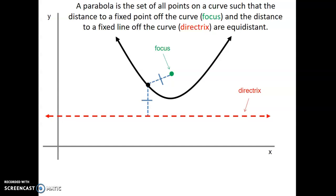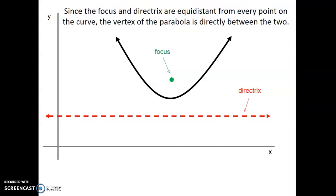This equidistance goes for every point on the curve. Since the focus (the green point) and the directrix (the red line) are equidistant from every point on the parabola, the vertex of your parabola is going to be directly between the two of them. The distance between the focus point and the vertex, and between the vertex and the directrix, are both the same.